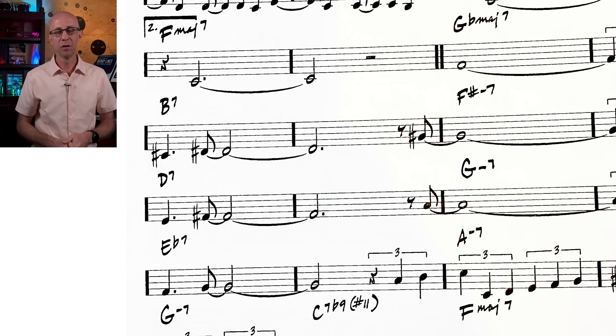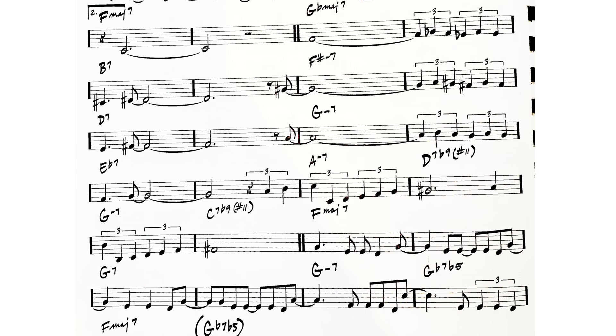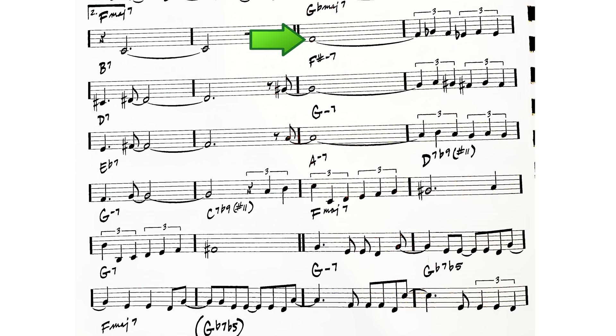But things get really interesting in the B section when we analyze the dominant chords B7, D7, and Eb7. At first glance, they seem to not follow any pattern at all. But a clue is hidden in the melody.